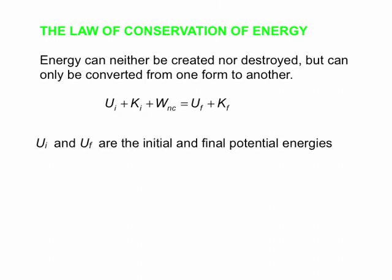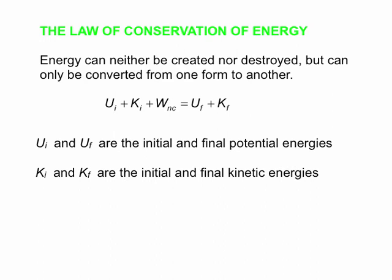So U is generally our symbol for potential energy. I means initial, F means final. So UI and UF are the initial and final potential energies. Then we have similar terms for KI and KF. Those are the initial and final kinetic energies. Work NC. NC stands for non-conservative. So WNC is the work done by non-conservative forces. Once again, we're treating conservative forces differently from non-conservative forces. Non-conservative forces, if there are any, we handle through this WNC term in the equation. If we have conservative forces, then we define potential energies for them, and we build them into the energy equation using the initial and final values of the potential energy.